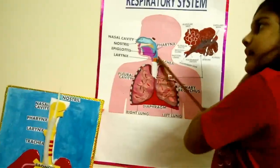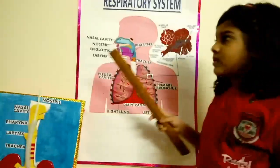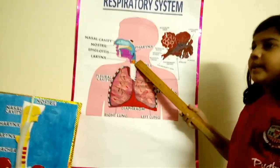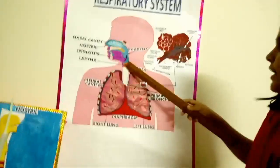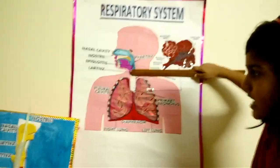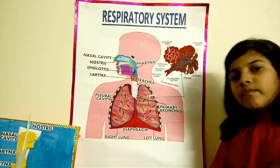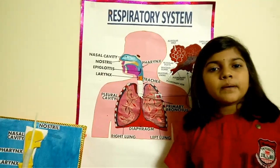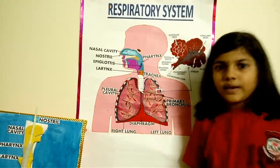Then air goes to the larynx, commonly called the voice box, which helps in breathing and producing sound. Then to the trachea. Can you see these lines? These lines are called cartilage, which prevents the trachea from collapsing — collapsing means falling down or breaking.